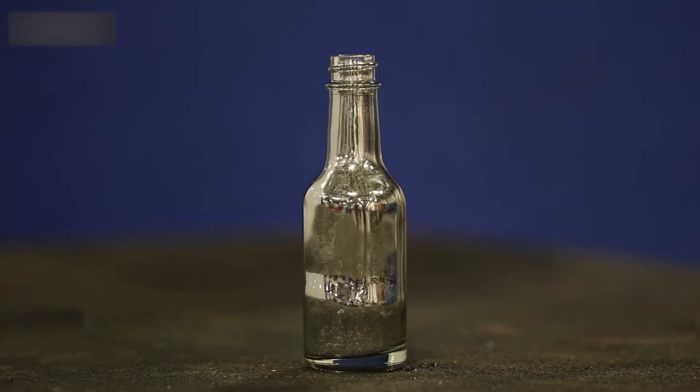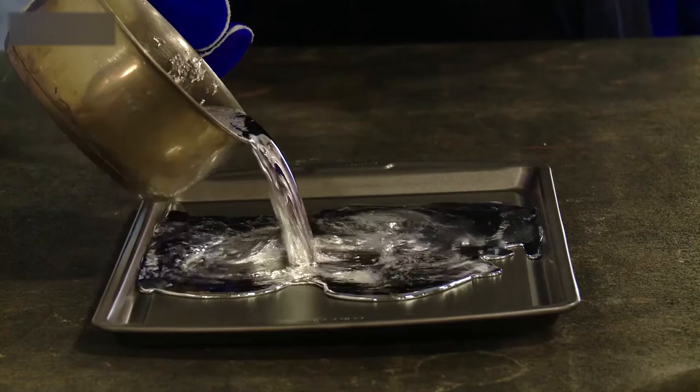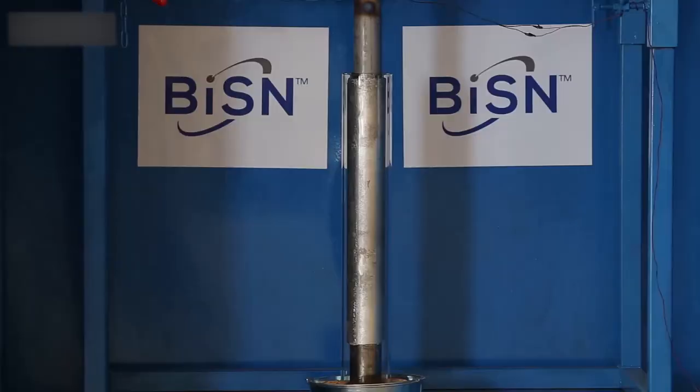Thermite heat provides energy to melt a bismuth-based alloy and the heavy liquid alloy flows, fills, and molds into downhole leak paths with gravity.